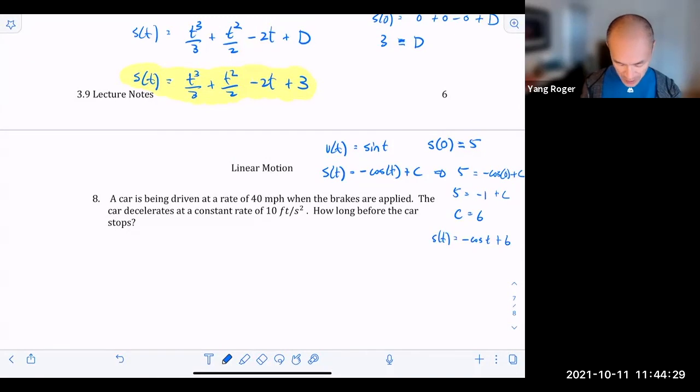So just be careful. Like, don't assume that the initial condition is always the C, because here's an example where it's not. Does that make sense?